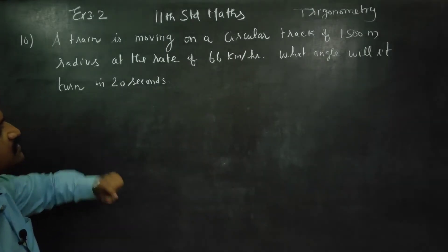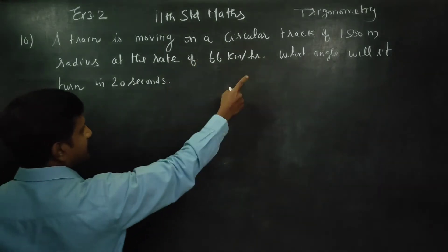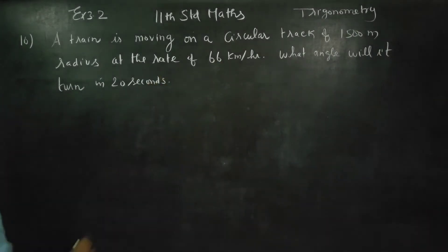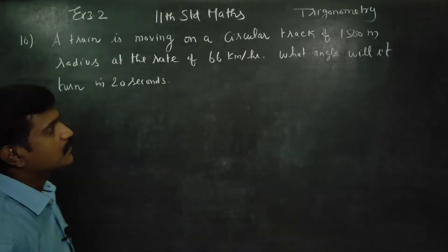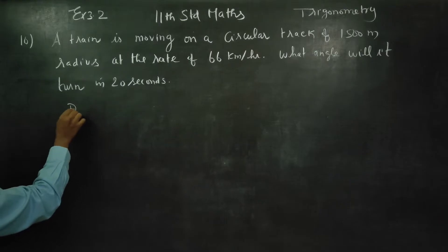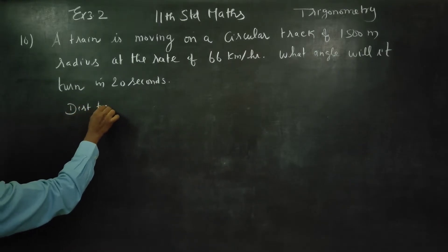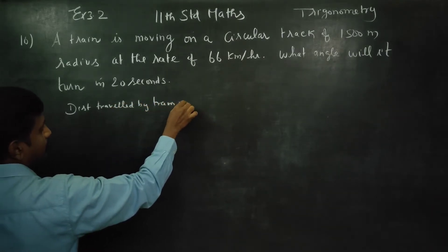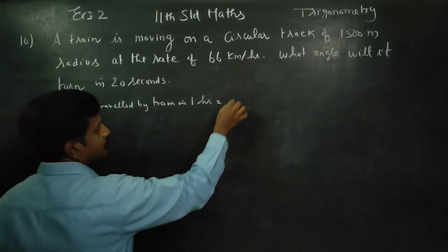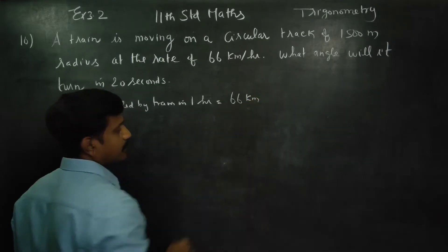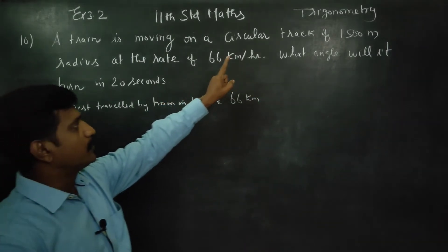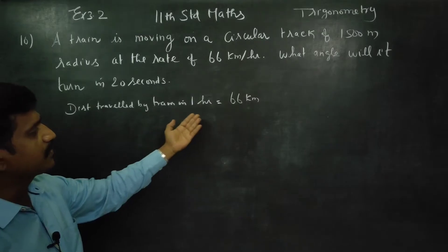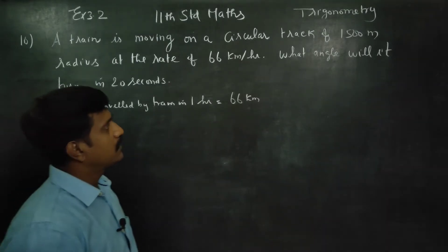Speed is given as 66 kilometers per hour. That means in 1 hour it will travel 66 kilometers. You can see the distance traveled by the train in 1 hour is equal to 66 kilometers. In 1 minute, the train travels a proportional distance. That is the rate — distance traveled by train in 1 hour is equal to 66 kilometers.